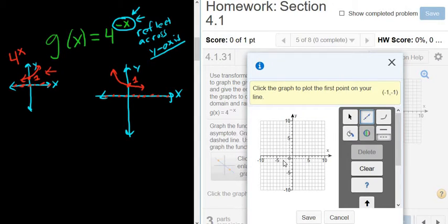And it's y equals 0. So I'm just going to click here. And then make sure it's horizontal. So I'll click here. All right. That's the horizontal asymptote.